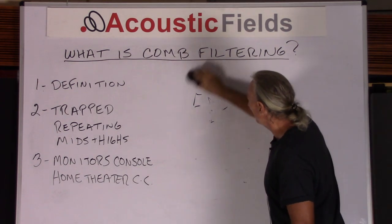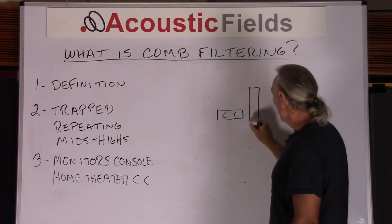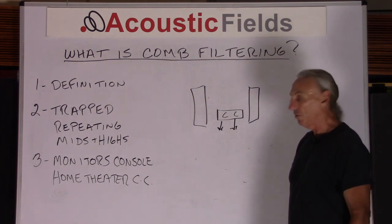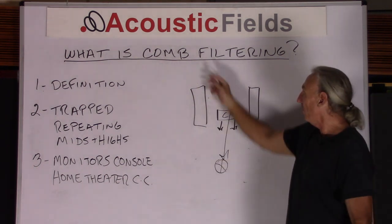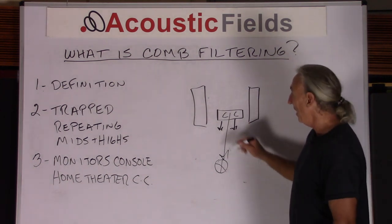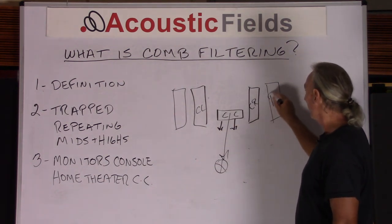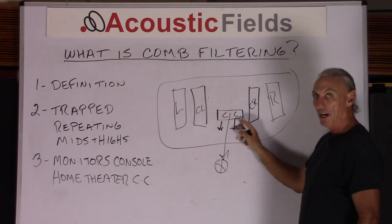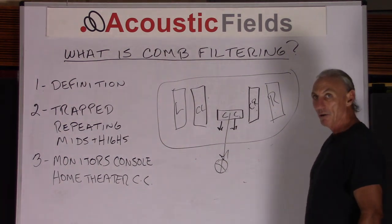We also see comb filtering in home theater applications with that center channel. Where is it usually located? It's usually on the floor. The first thing the energy from the center channel strikes is the floor, and then it arrives at the listening position. So we have direct energy from the speaker, plus all these reflections and interference patterns off the floor competing with that direct energy. We're not a big proponent of center channels — we split the signal and use a separate speaker array: center left, center right, right, and left. This array puts all energy in a straight horizontal plane, eliminating unwanted vertical dispersion.